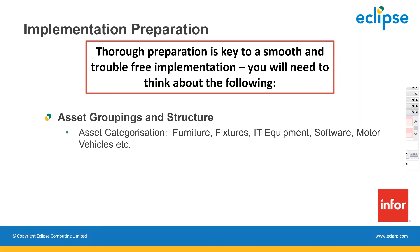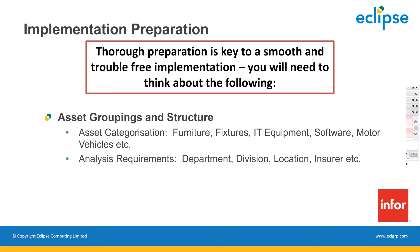The second part is considering what analysis requirements we may wish to set up. If we've got an asset register set up, what are the kinds of things we may wish to analyze it by? Common options include division, location, cost center, insurer, or project code — for example, if assets were purchased as part of a project or program of work and we need to track those costs together. The driver here is really reporting and analysis further down the line.